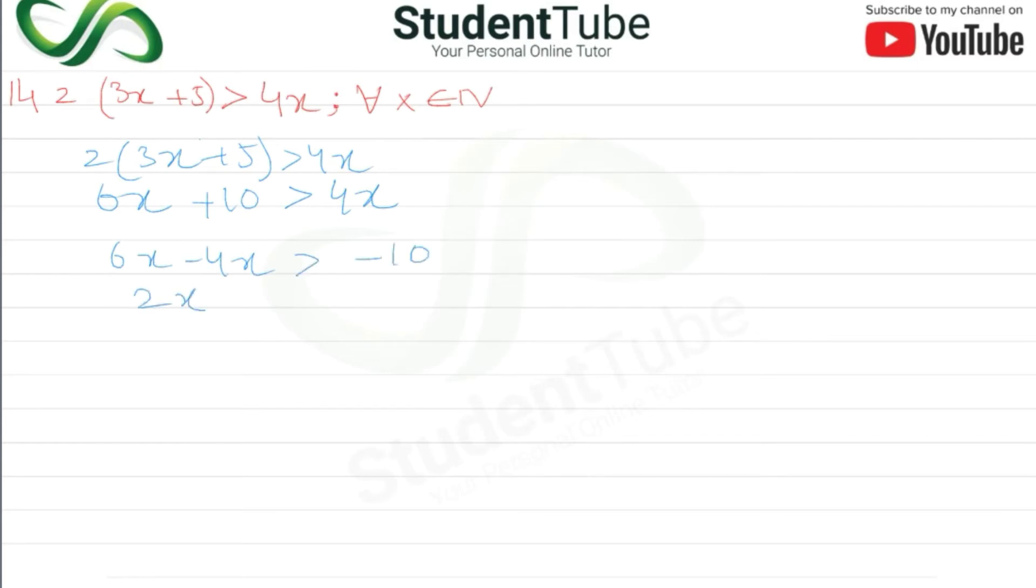So here is 2x > -10. x > -10 upon 2. 2x divided by 2, 10 divided by 2 is 5, so x > -5.